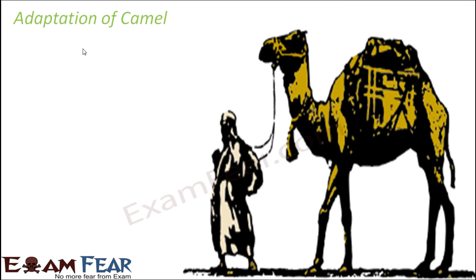When we say adaptation, there are many different adjustments that the body of an organism makes to survive in an environment. We will look at a few examples of animals and how they adjust in different ways to survive in their habitat. Let us start with the adaptation of the camel.